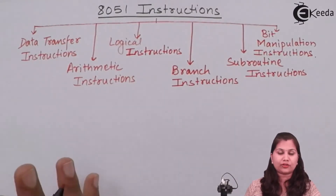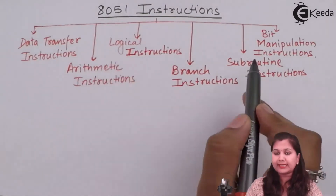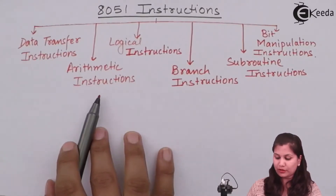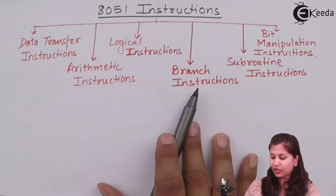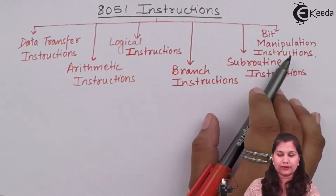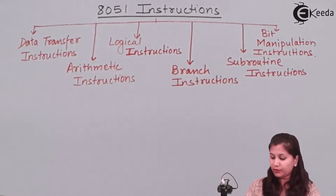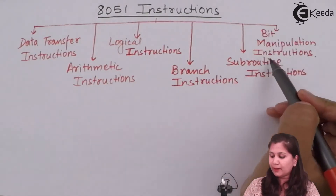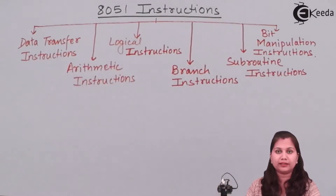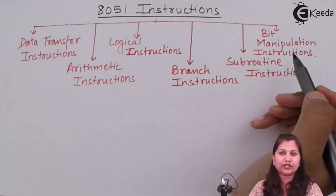All the instructions of the 8051 are classified into six categories. First, we have the data transfer instructions, arithmetic instructions, logical instructions, branch instructions, subroutine instructions, and bit manipulation instructions. We have already studied these five types in our earlier videos, so in this video we will study the bit manipulation instructions.